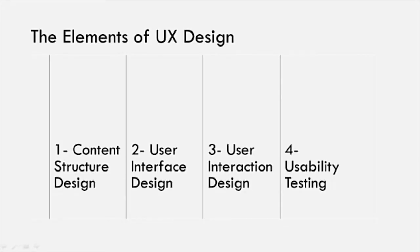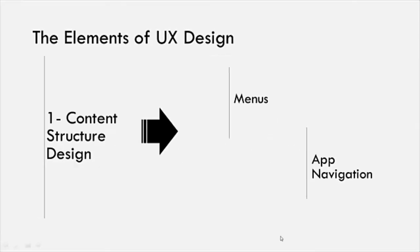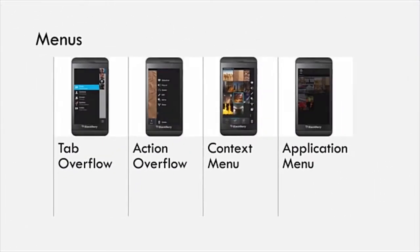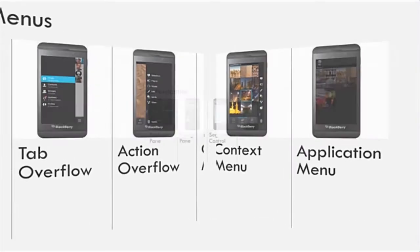Today, in part two, we're going to dive deeper into the elements of the user experience design. The very first step of your app design is to define its content structure. Here, you structure and organize the information and actions in your application under the different types of menus. You also decide on the user flow or app navigation.